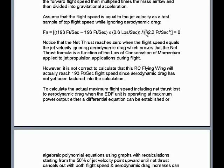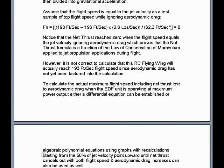This proves that the net thrust formula is a function of the law of conservation of momentum applied to jet propulsion applications during flight. However, it is not correct to calculate that this RC flying wing will actually reach 193 feet per second flight speed, since aerodynamic drag has not yet been factored into the calculation. To calculate the actual maximum flight speed, including net thrust lost to aerodynamic drag when the EDF unit is operating at maximum power output, either a differential equation can be established, or algebraic polynomial equations using graphs with recalculations starting from the 50% of jet velocity point upward until net thrust cancels out with both flight speed and aerodynamic drag increases can also be used.